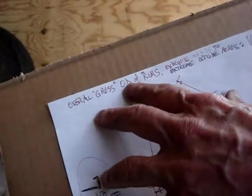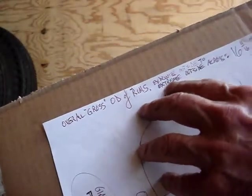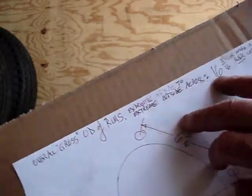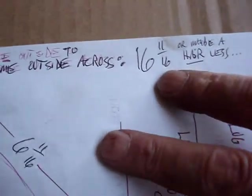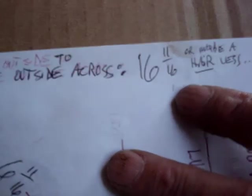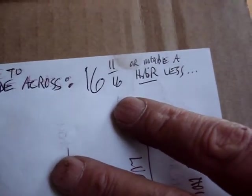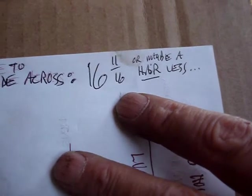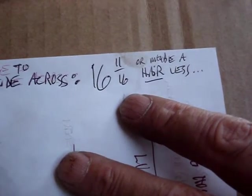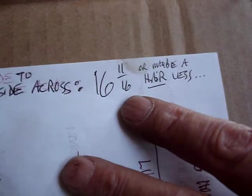I told you before the overall OD of the rims, extreme outside to extreme outside across, is 16 and 11/16ths, or possibly a wee hair less than that. And when I say a wee hair I'm talking about way less than a 32nd, I'm talking about 10 or 15 thousandths. So for all practical purposes it's 16 and 11/16ths.